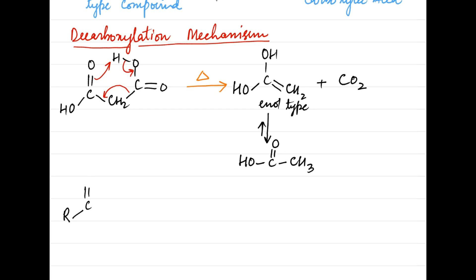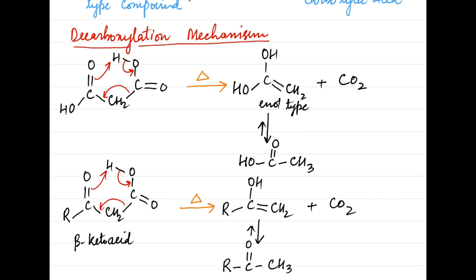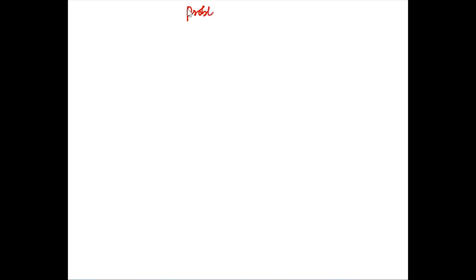In the same way, a beta-keto acid loses a molecule of carbon dioxide upon heating to form the enol form of a ketone. The enol form quickly tautomerizes to the more stable keto form.